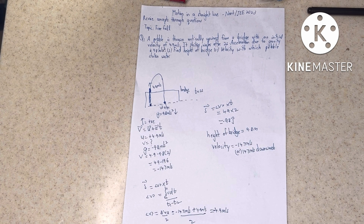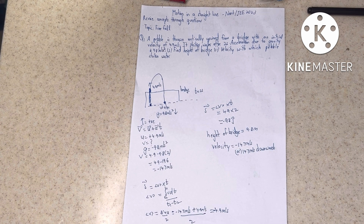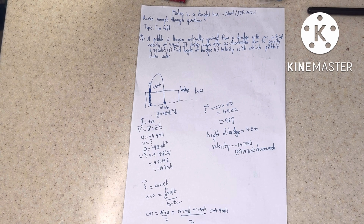Question number one: a pebble is thrown vertically upward from a bridge with an initial velocity of 4.9 meters per second. It strikes water after 2 seconds. Acceleration due to gravity is 9.8 meters per second squared. Find the height of the bridge and the velocity with which the pebble strikes the water.